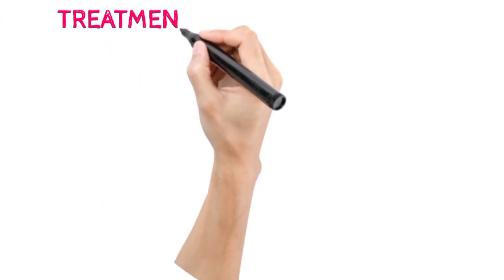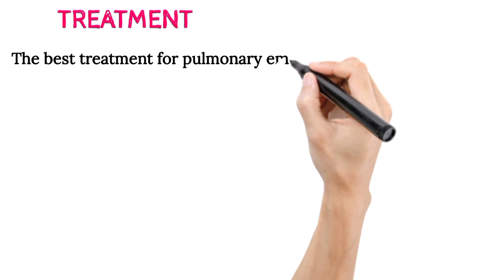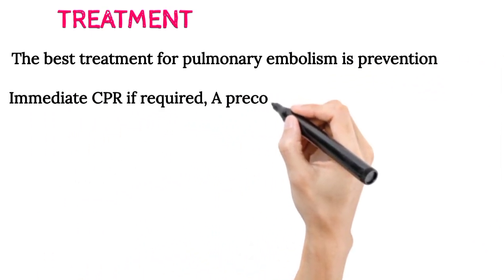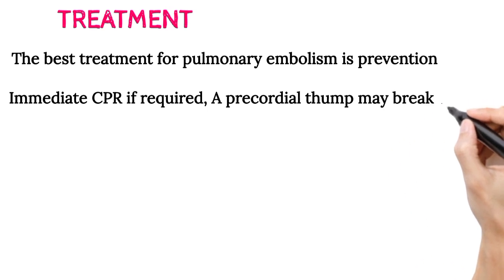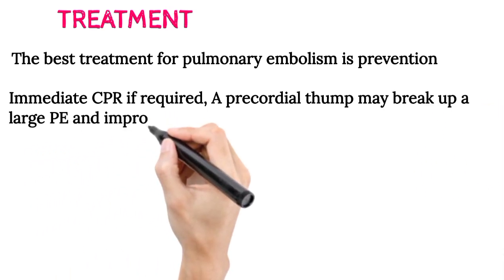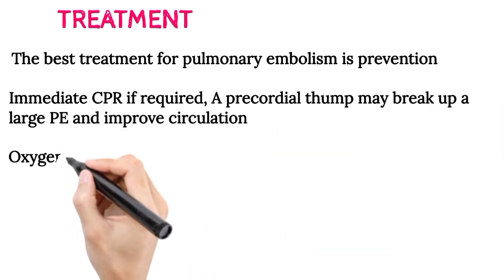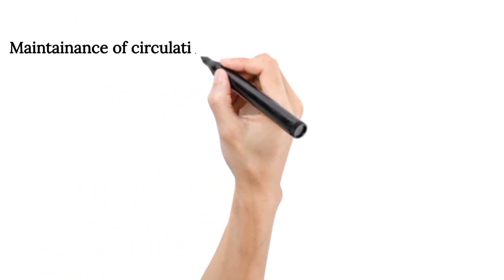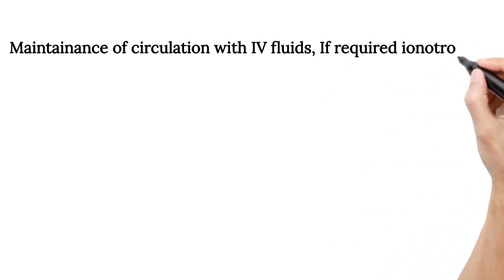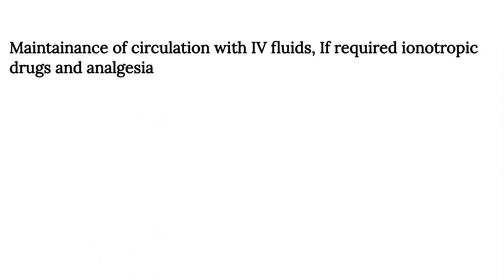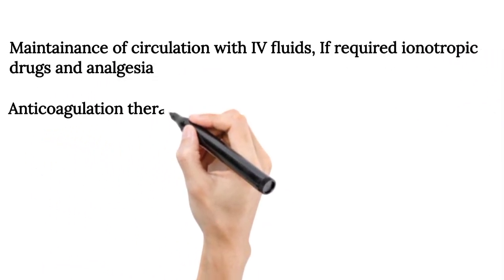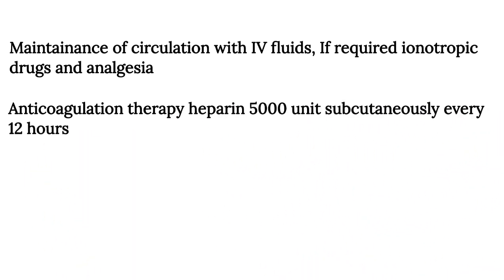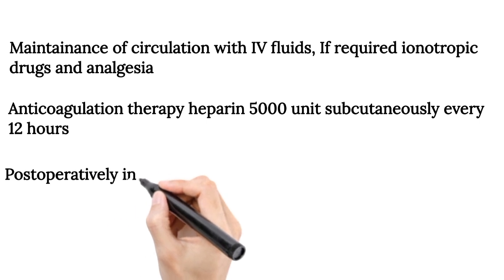Treatment: The best treatment for pulmonary embolism is prevention. If required, immediate cardiopulmonary resuscitation should be performed. A precordial thump may break up a large pulmonary embolism and improve circulation. Treatment also includes oxygen therapy, maintenance of circulation with intravenous fluids, inotropic drugs if required, analgesia, and anticoagulation therapy with heparin 5000 units subcutaneously every 12 hours post-operatively in high-risk patients.